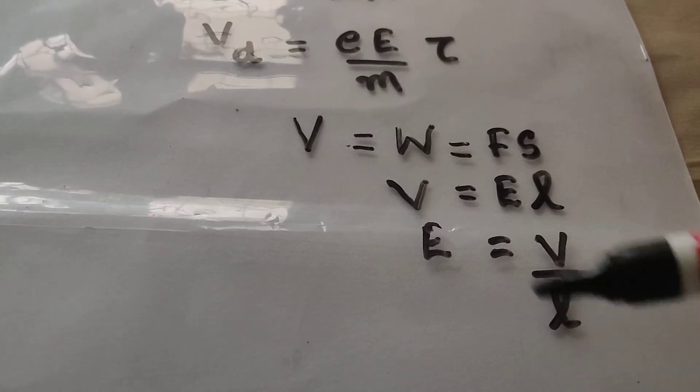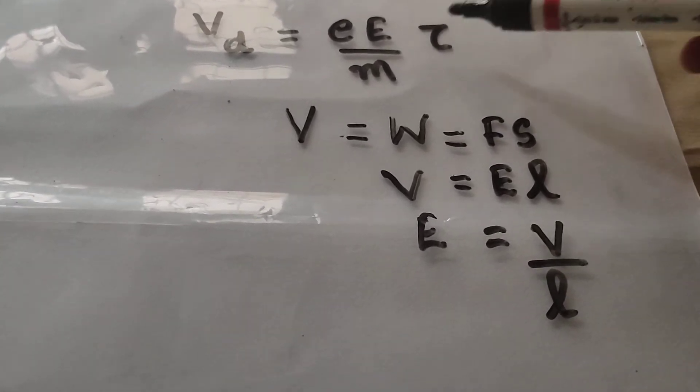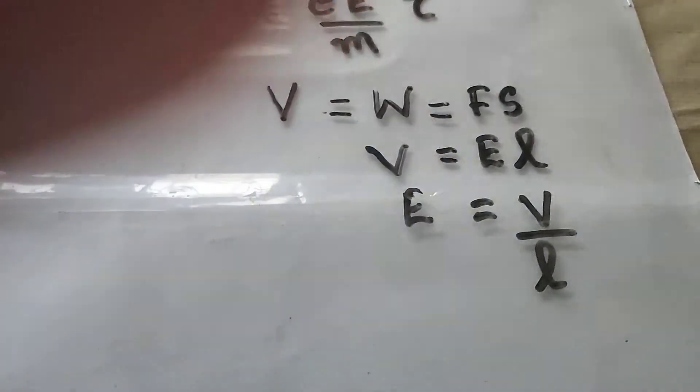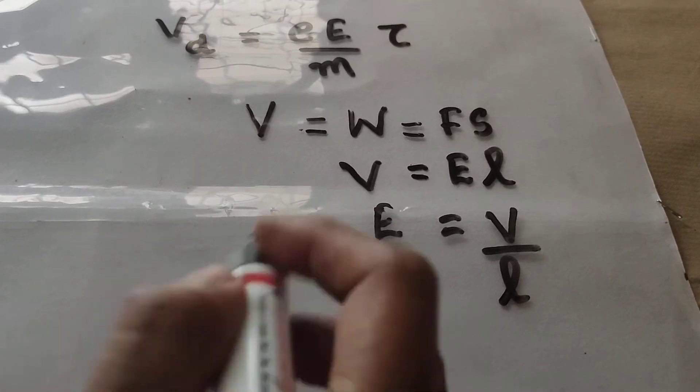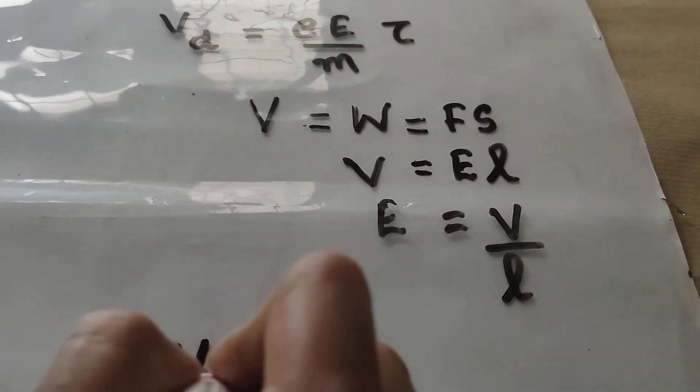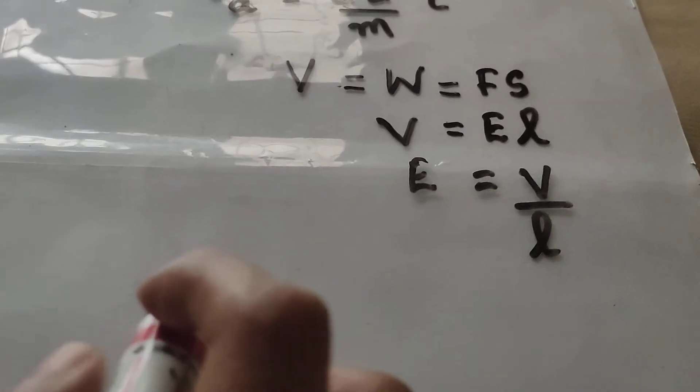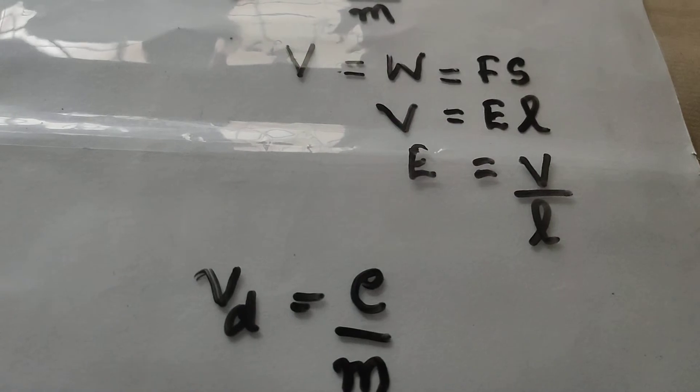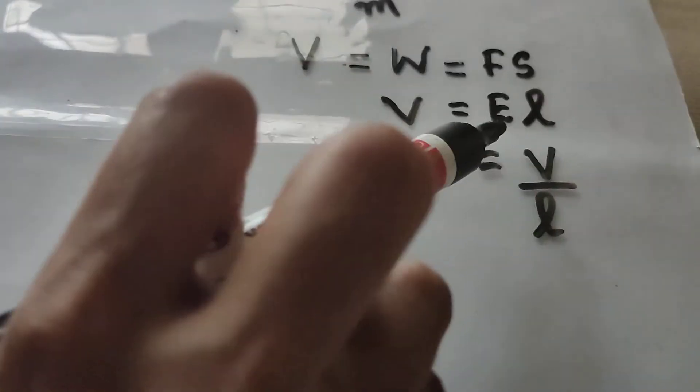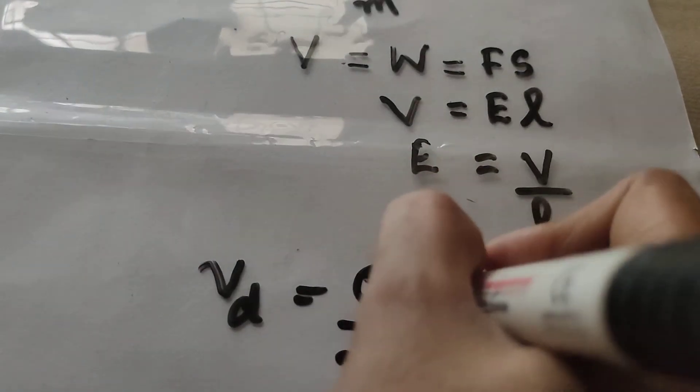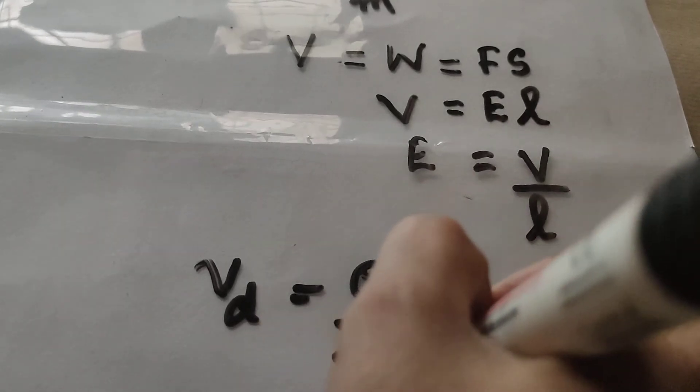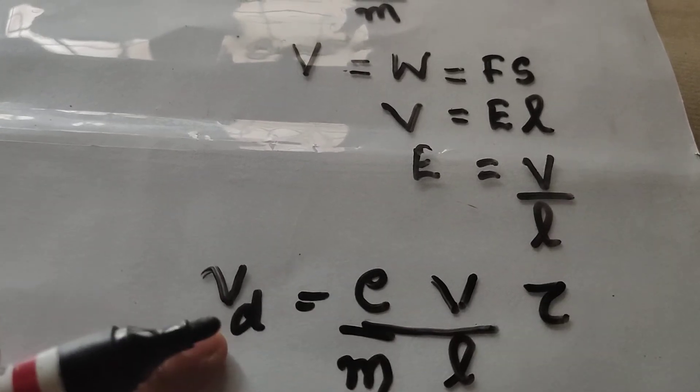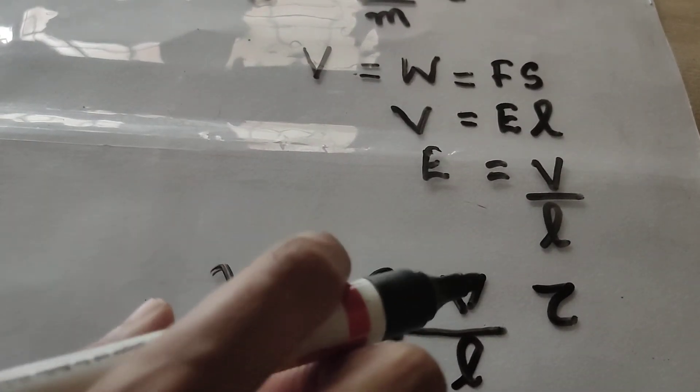So, we can substitute this E here in this equation. So, Vd will become Vd is equal to e by m, what is E? E is equal to V by L. So, V by L into tau is the equation for drift velocity in terms of potential difference V.